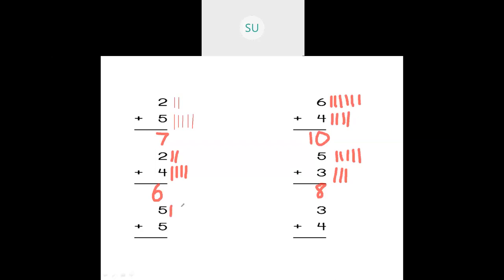Now five plus five. Draw five tally marks, then five more. Count them: one, two, three, four, five, six, seven, eight, nine, ten. So five plus five is equal to ten. Then three plus four: draw three tally marks, then four more. Count: one, two, three, four, five, six, seven. So three plus four is seven.